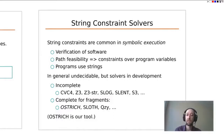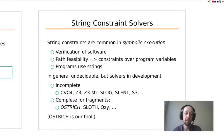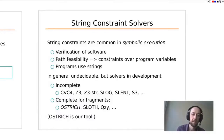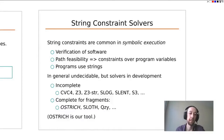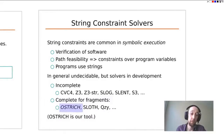String constraints are in general undecidable, but that doesn't stop people developing solvers. Some solvers are incomplete — they do the best they can but sometimes have to give up. Others are complete but only for specific fragments of string constraints. Among these tools, the Ostrich tool is the one we're working on, together with the authors of this work plus Taolu Chen from Birkbeck.